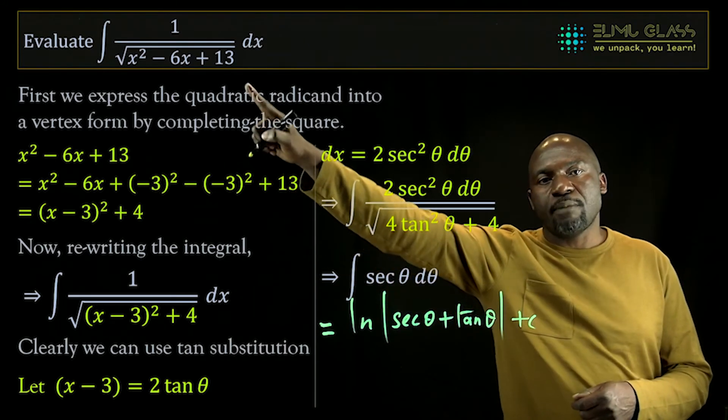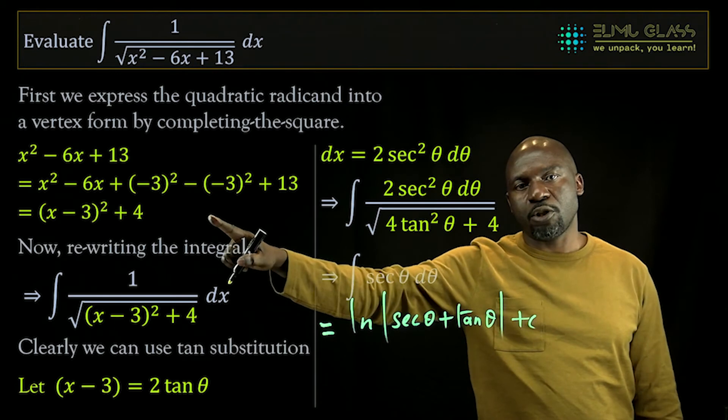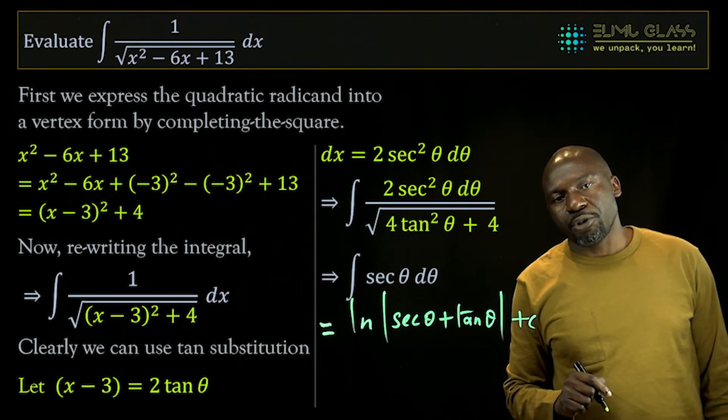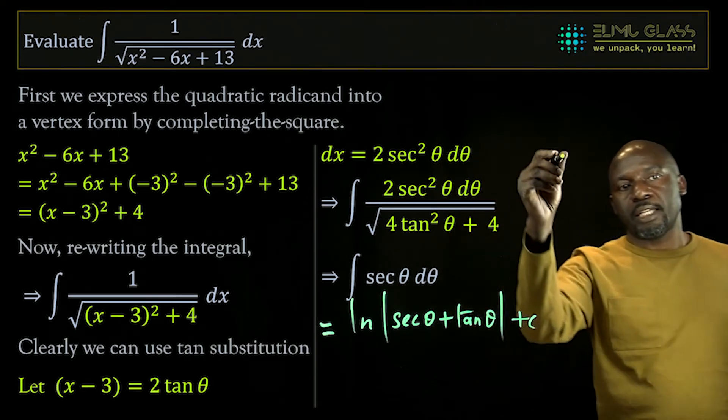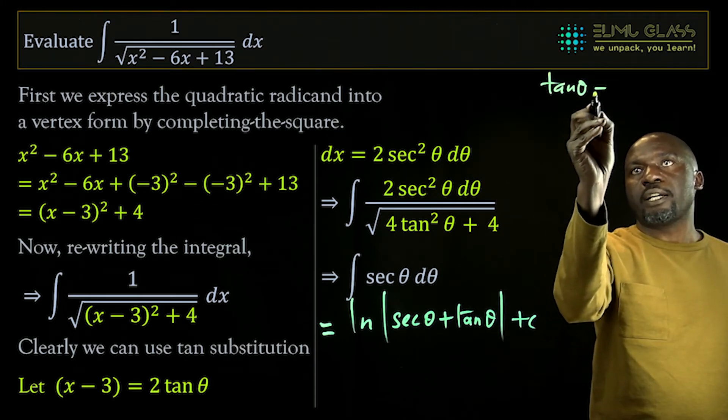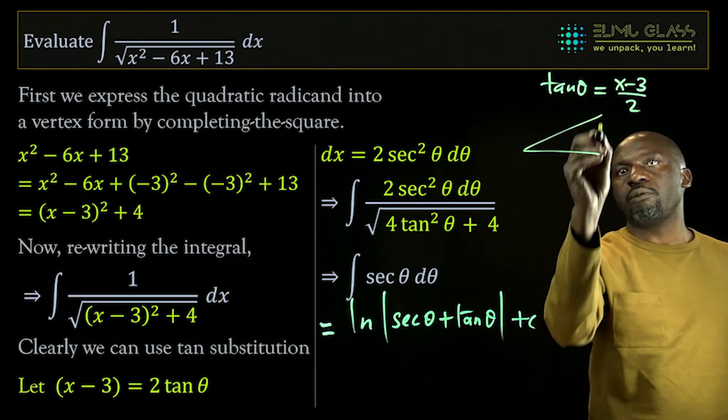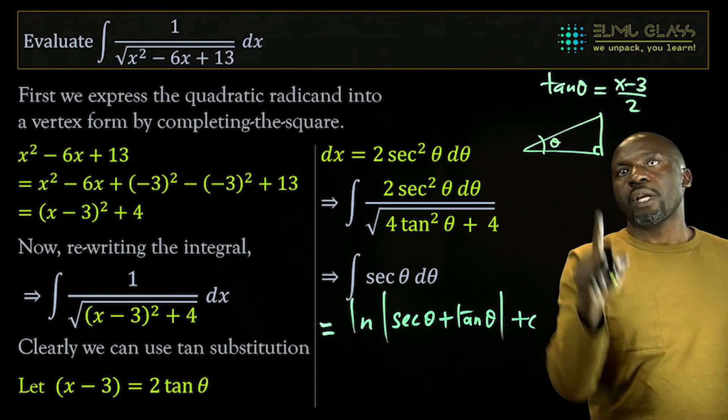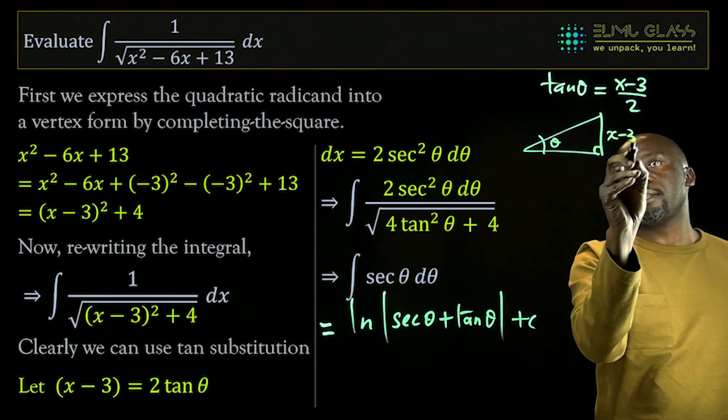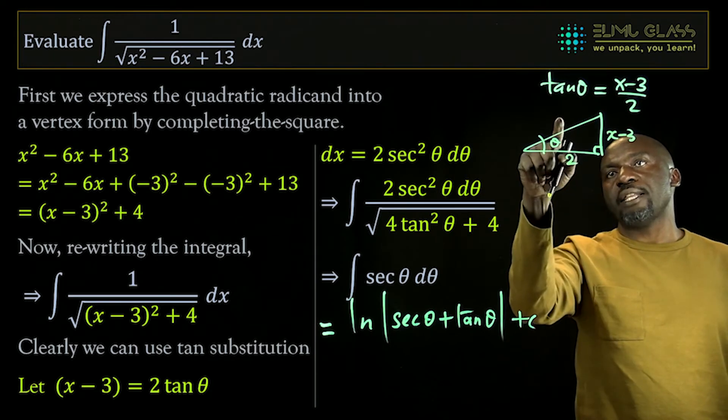Now I need to replace this because my answer must be in terms of x, so I need to replace this. To do that, I go back to my original substitution. We let x minus 3 be equal to 2 tan theta, which is to say that tan of theta is in fact x minus 3 over 2. So if I was to draw that right angle triangle, then this is theta. Tan theta is opposite over adjacent, so that must be x minus 3, and this must be 2.